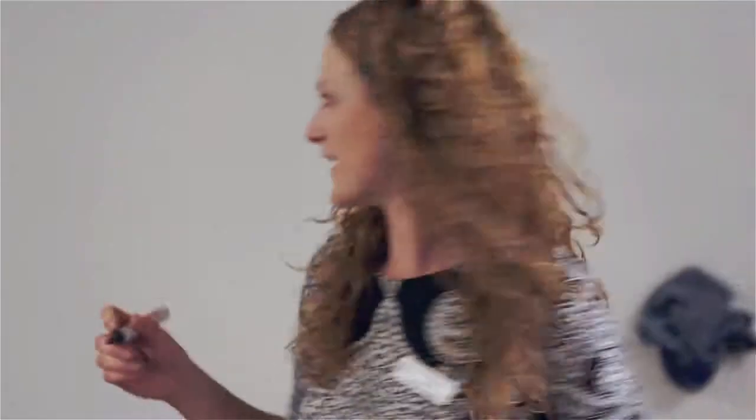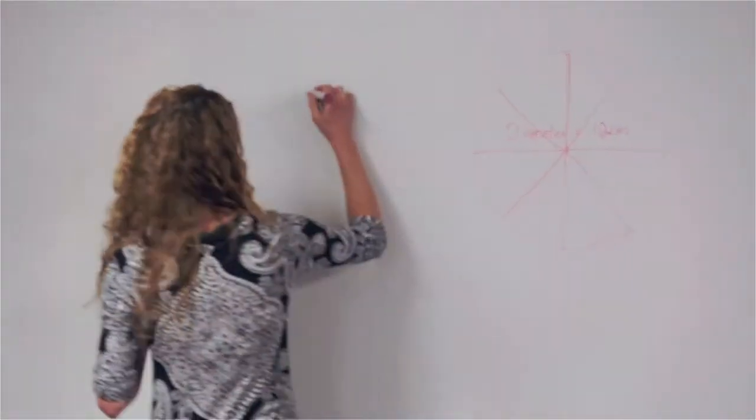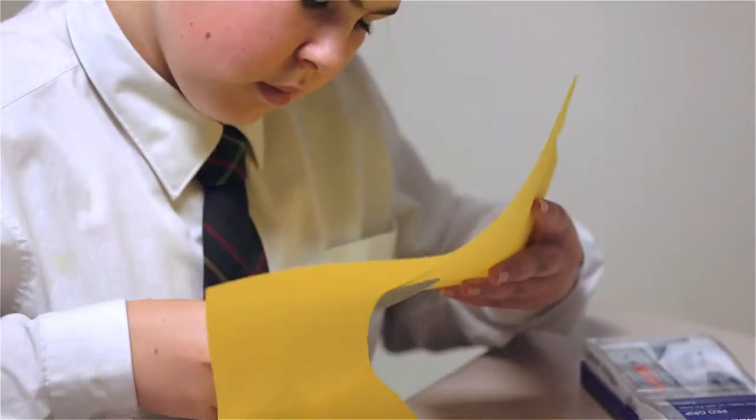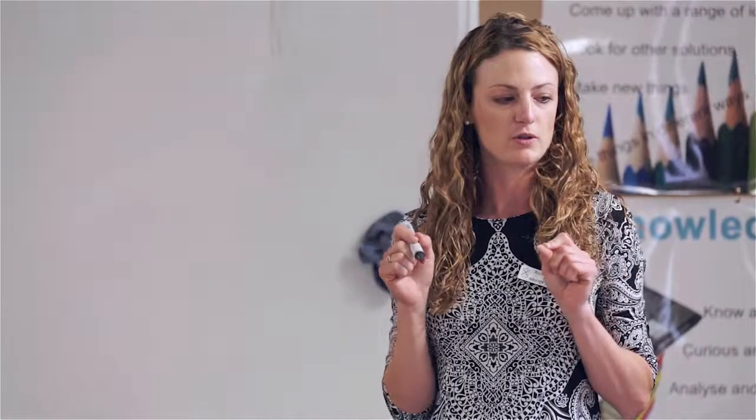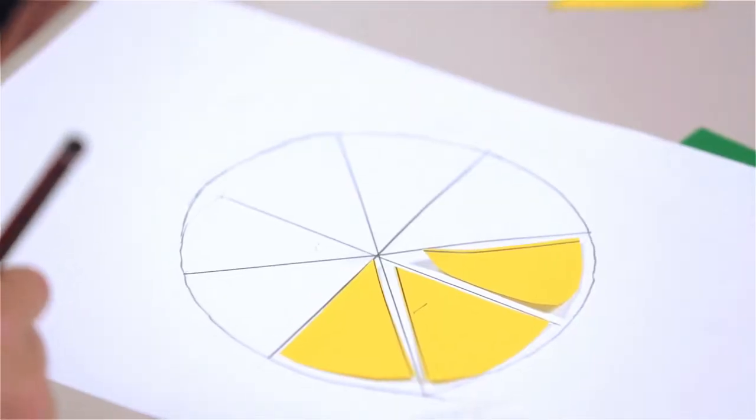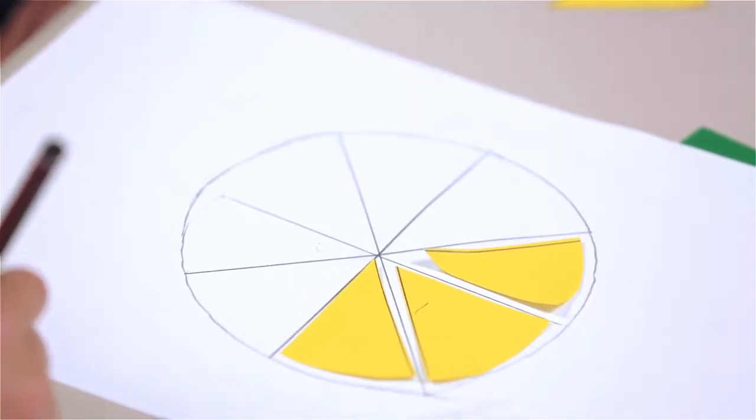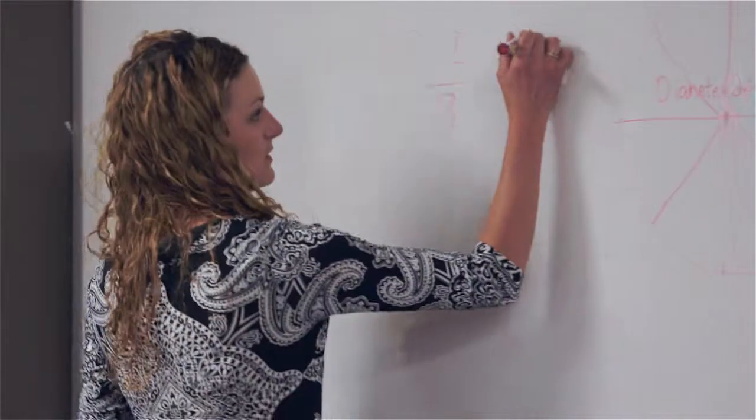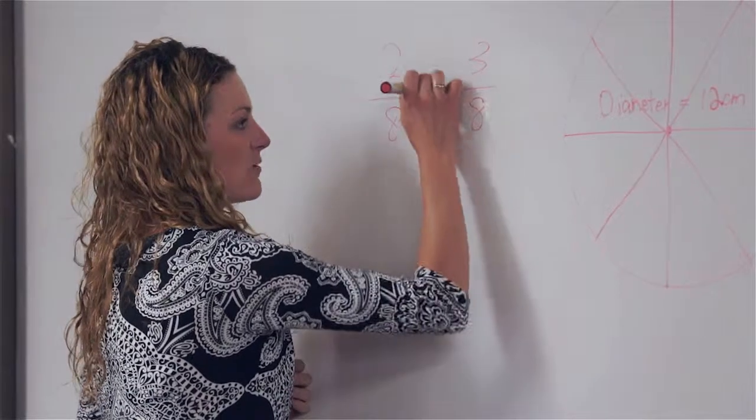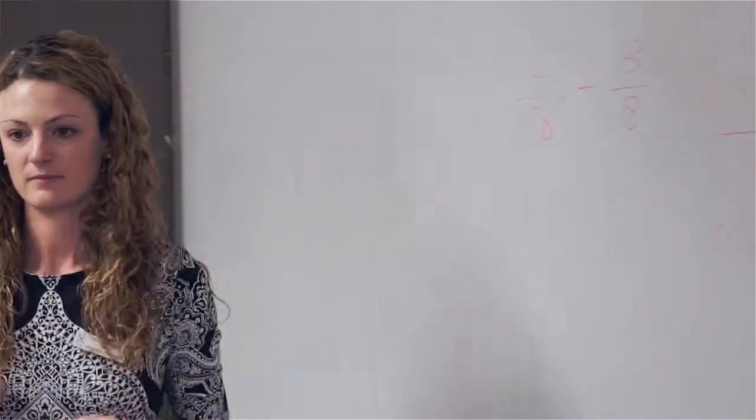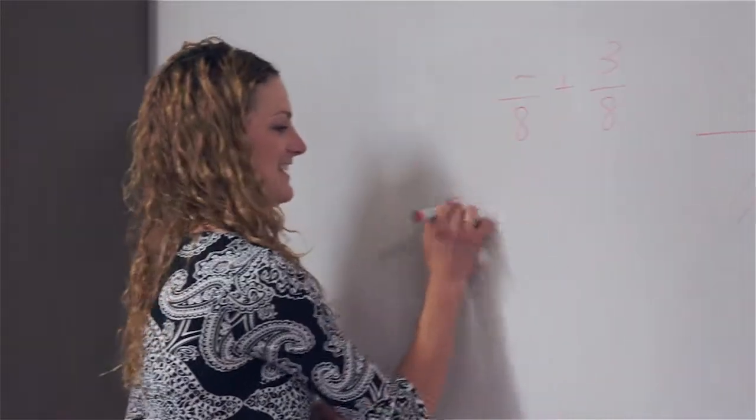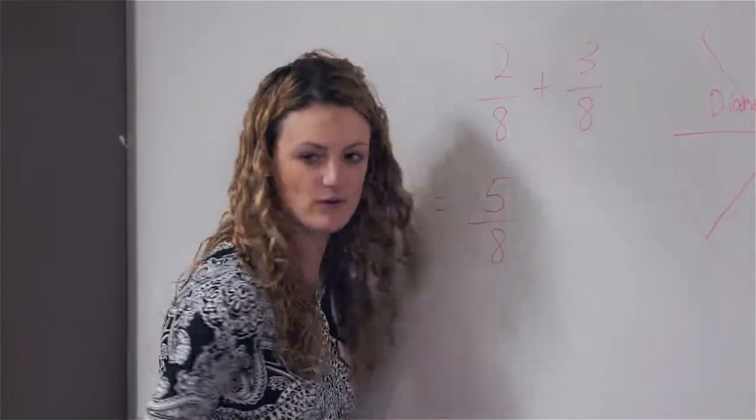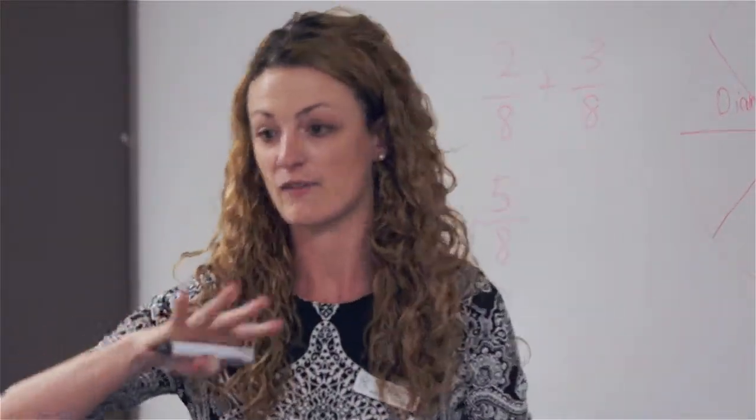So now I want you to add on another three bits of section to that. Now how would I write three sections as a fraction? As a fraction I'd write 3 over 8, and I'm adding them.